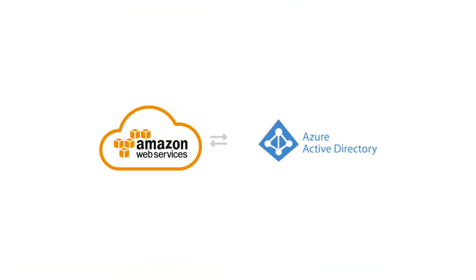The reason for integrating Azure Active Directory is you can have a unified login experience — whether you're using Office 365, logging into domain machines, VDIs, etc. You can use the same credentials to log into AWS as well. Users don't need to remember multiple credentials. Additionally, you can make use of conditional access policies to secure your infrastructure.